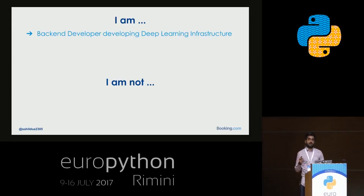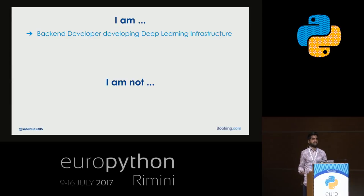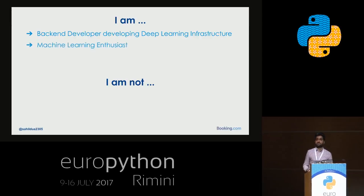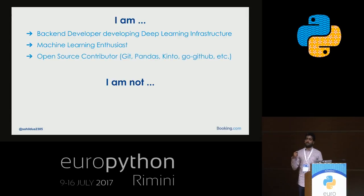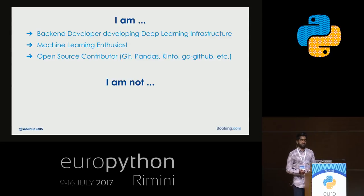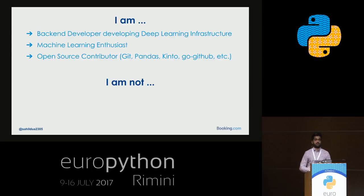I'm a back-end developer working on developing the infrastructure for deploying deep learning models at Booking.com. I'm also a machine learning enthusiast, so both of these things match well for me. I'm a big open source fan and a contributor in projects like GIFTool, the Pandas library, Kintro by Mozilla, the GoGitHub project by Google, and a bunch of other projects. I'm also a tech speaker.